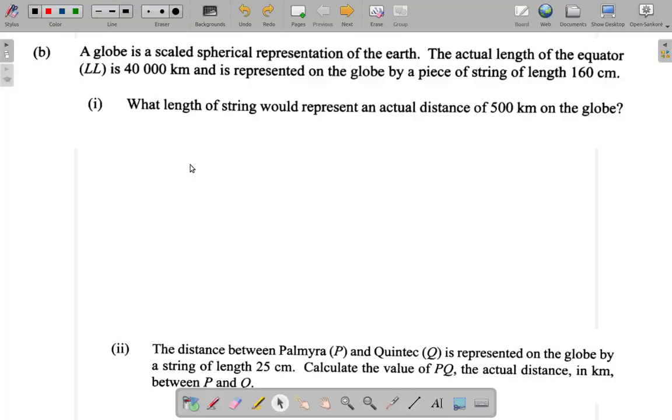Okay, part B. Let's see what this is about. It says a globe is a scaled spherical representation of the Earth. The actual length of the equator, LL, is 40,000 kilometers and it's represented on the globe by a piece of string of length 160 centimeters. What length of string would represent an actual distance of 500 kilometers on the globe?